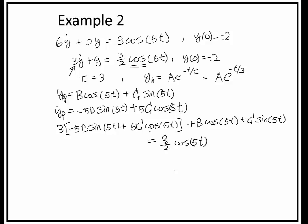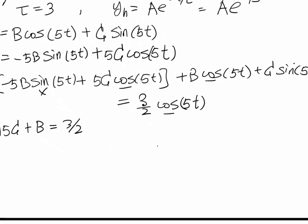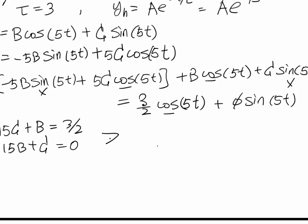Collecting the cosine terms, we get 15c plus b equal to 3 over 2. Collecting the sine terms, we get minus 15b plus c equal to 0, because there is no sine term on the right-hand side. We now have two equations and two unknowns, so we can go ahead and solve for b and c.